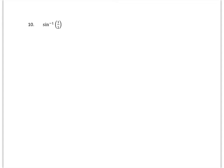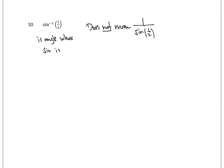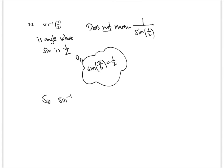For this problem we're looking at an inverse trigonometric function. When we see sine to the minus 1, that does not mean 1 over sine — it means the inverse sine of 1/2. So this is asking: what angle has a sine of 1/2? We know that the sine of π/6, or 30 degrees, is 1/2. So the inverse sine of 1/2 is π/6.